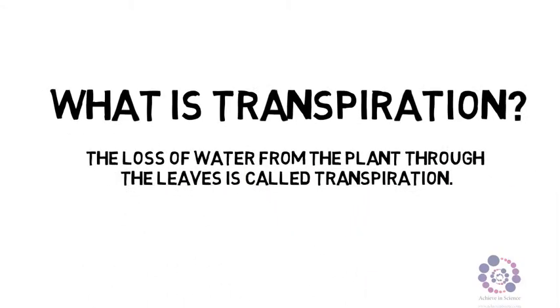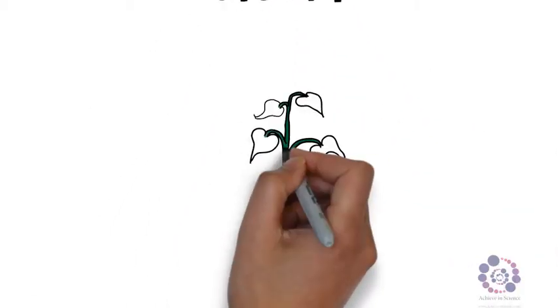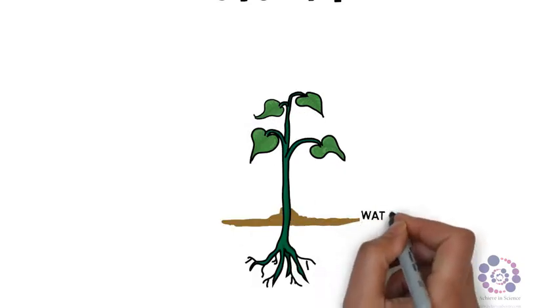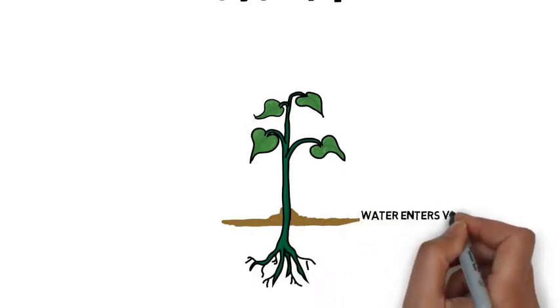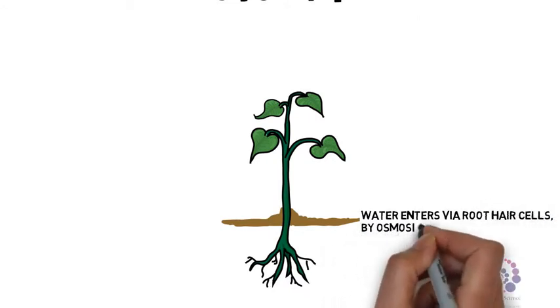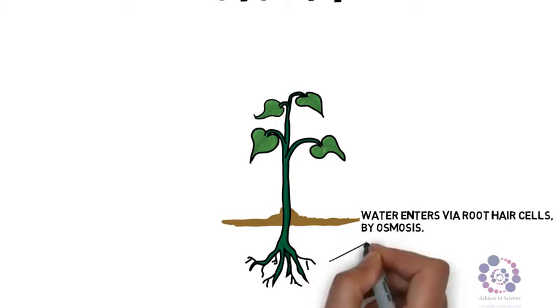Next, let's look at how this occurs. If we begin by looking at the structure of a plant, we know that water begins its entry into the plant via the root hair cells, via a process called osmosis, where water moves from a high to low concentration across a partially permeable membrane.